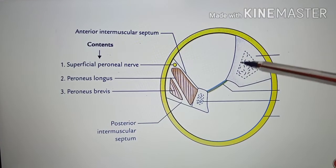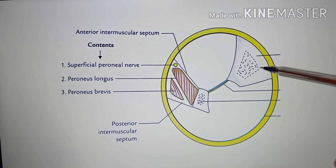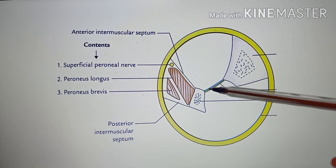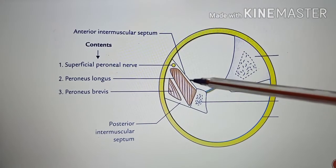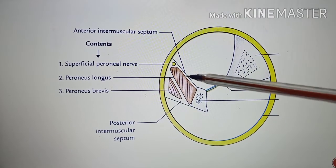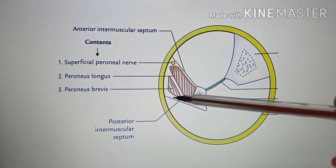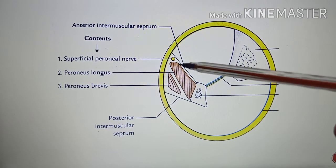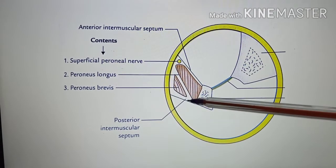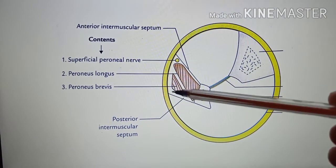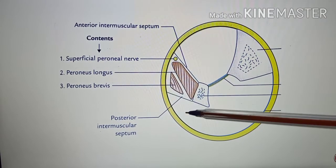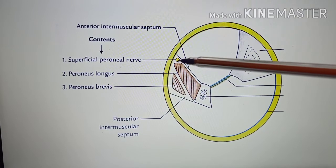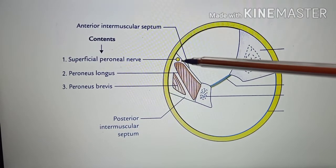In this picture you can see the tibia on the medial side and the fibula on the lateral side. This is the interosseous membrane connecting these two bones. Here you have the anterior intermuscular septum and the posterior intermuscular septum. Between them is the lateral compartment of the leg, and behind this is the posterior compartment. You can see the superficial peroneal nerve lying in the lateral compartment.